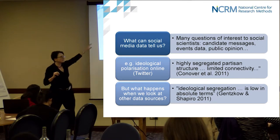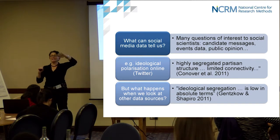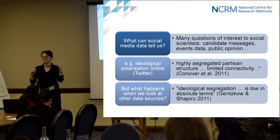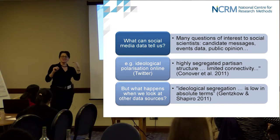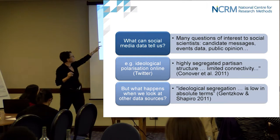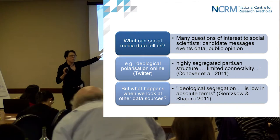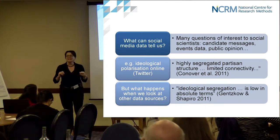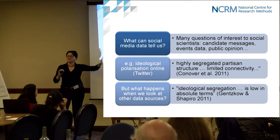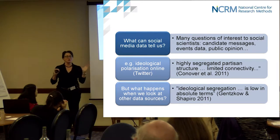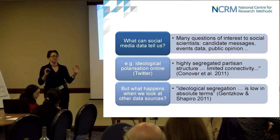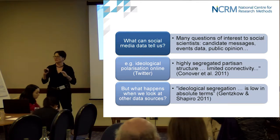But what happens when we look at other online data sources? Twitter is about what's on Twitter, and we know it's a fairly selective audience. By some estimates, only ten percent of people actively use Twitter. So is that giving us a whole picture of the national conversation, or is it a very select element? When we look at other sources of online data, what has been found is that ideological segregation is low in absolute terms. This is from a paper by Genskow and Shapiro from 2011 that uses a combination of social media data, web browsing history, and analysis of news stories that are shared.